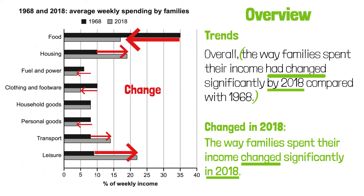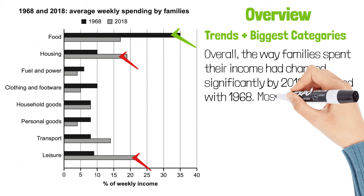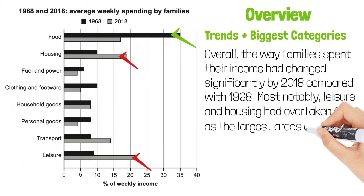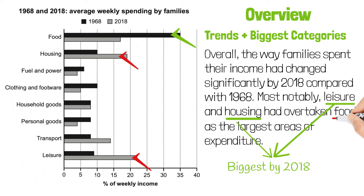I will also talk about the biggest categories in this paragraph. As you can see, in 1968, food was the single biggest category. However, it was overtaken by housing and leisure. So we can say that most notably, leisure and housing had overtaken food as the largest areas of expenditure. This sentence not only tells readers that leisure and housing had become the biggest categories by 2018, but also tells that food was the biggest category in 1968. This is the entire overview paragraph.